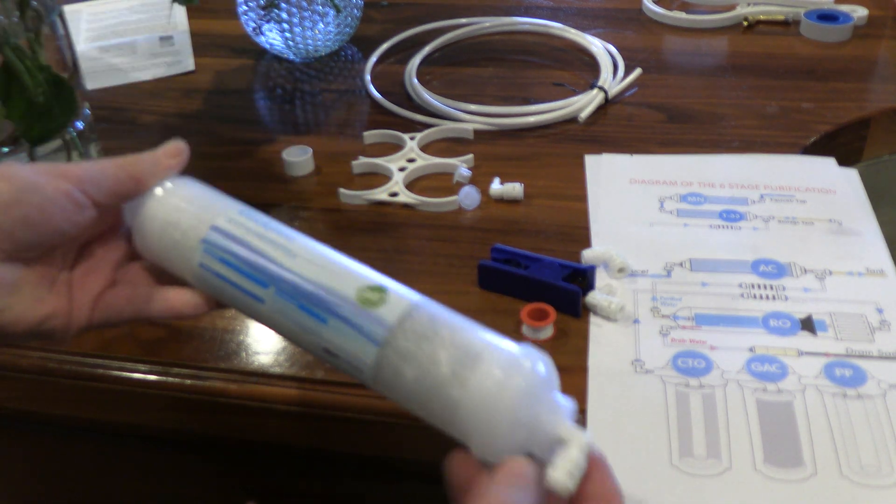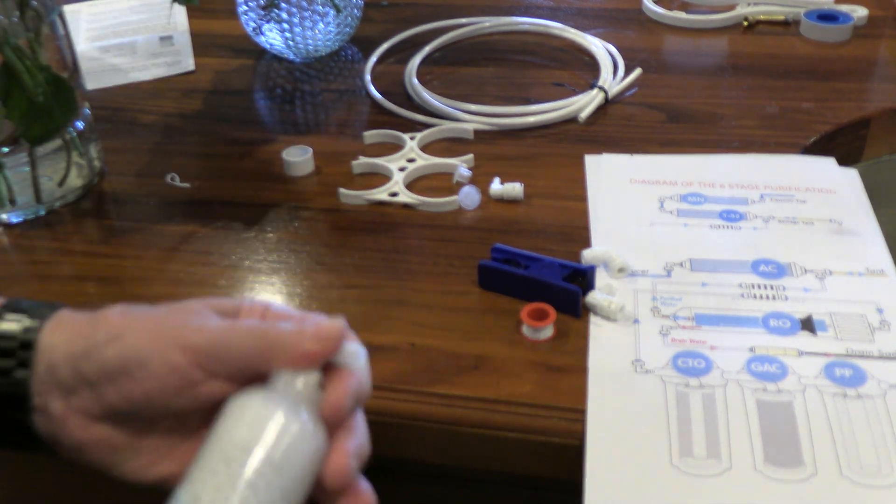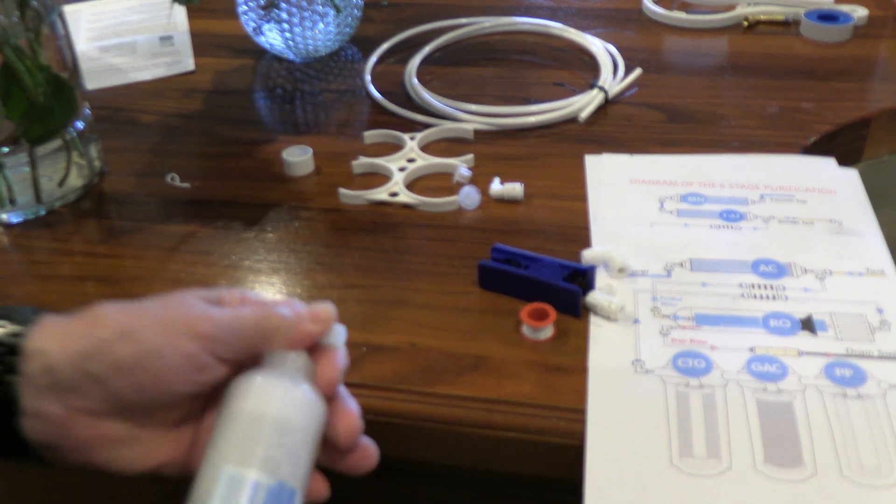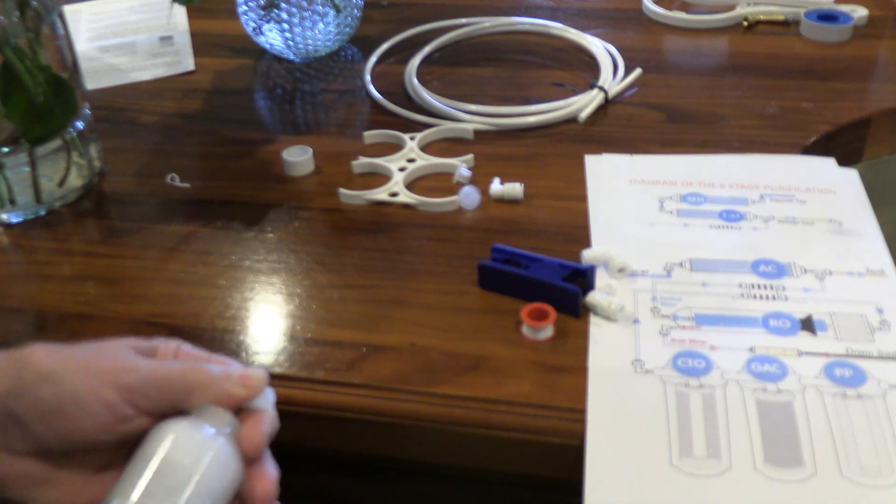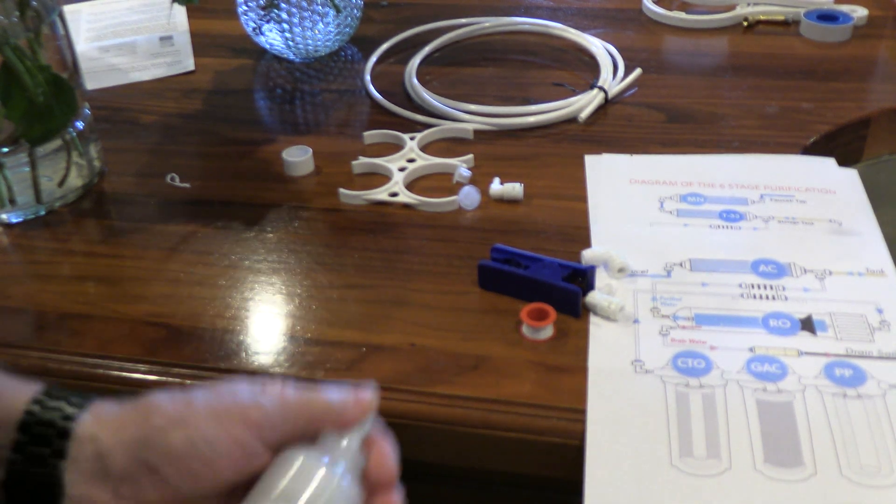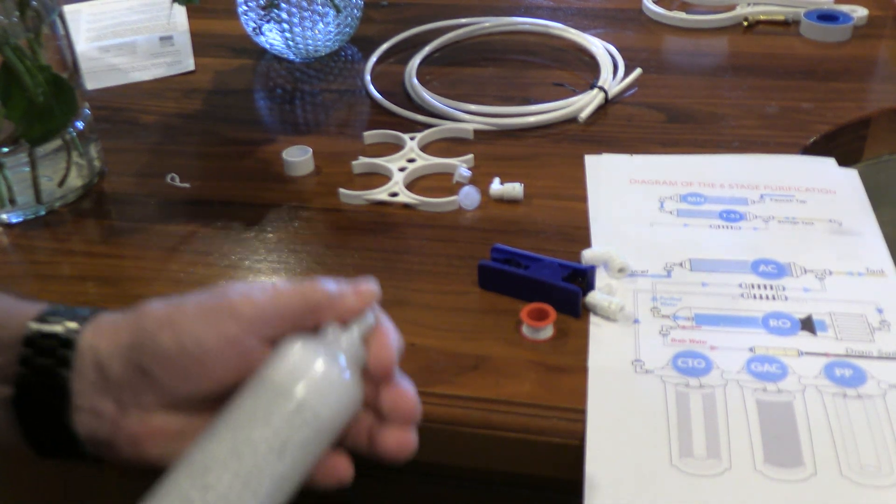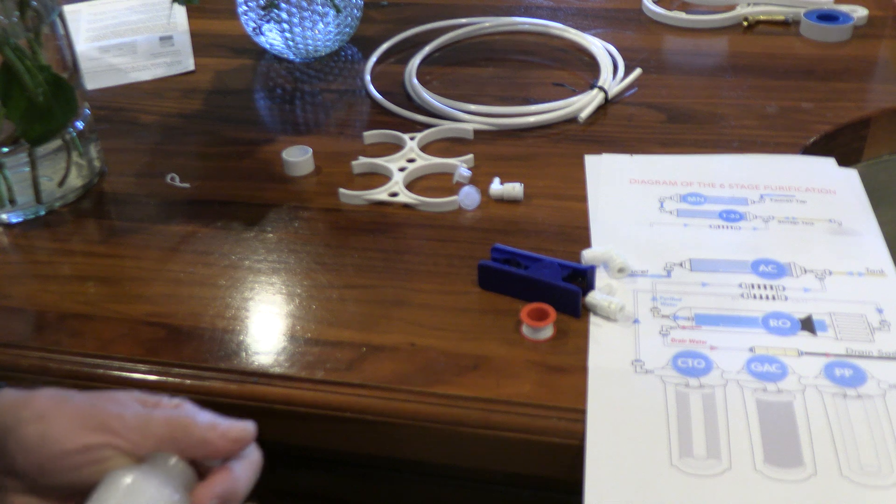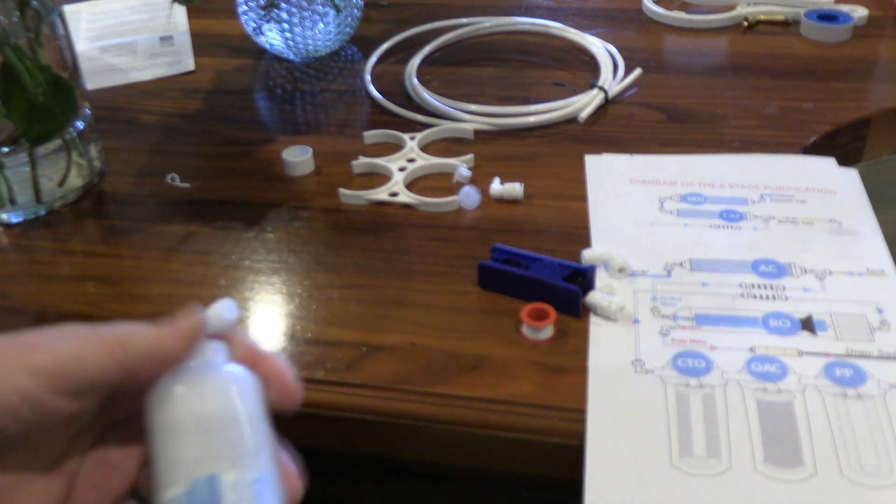So the in, I have a quick connect. The out, I have the standard connection, which is already set up with the tubing that goes to the faucet. All right. That's set up.